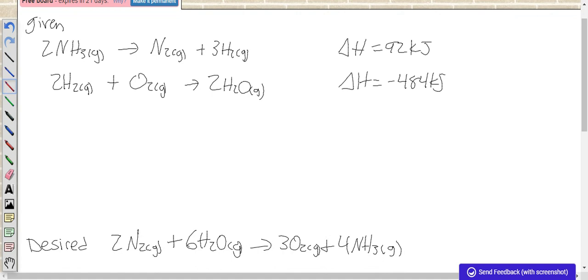First thing, NH3 appears only once so it has to match exactly. It's a reactant here, we need it as a product, so we're going to have to flip it. There's also only two and we need four, so we're going to flip and times two.